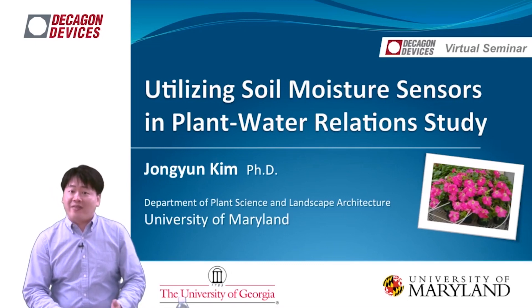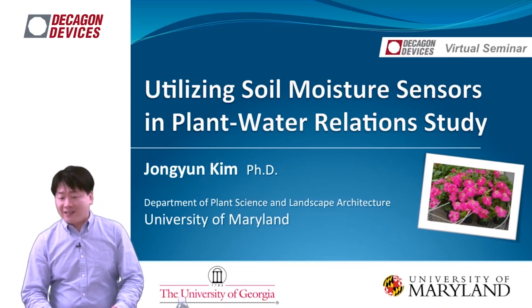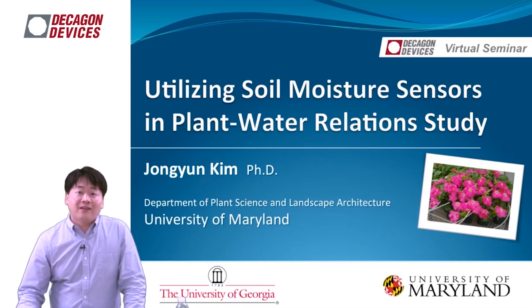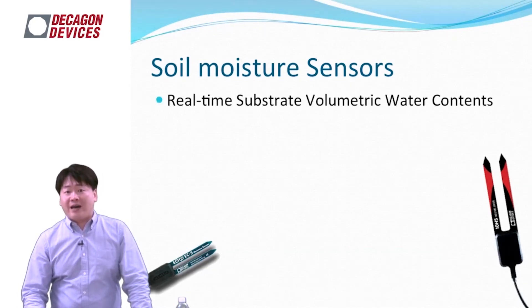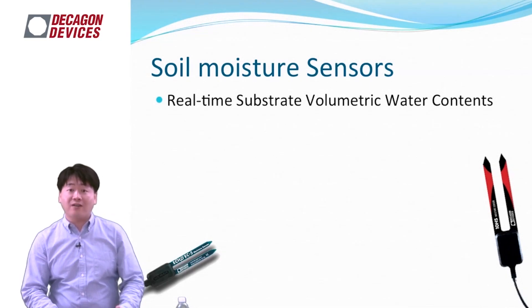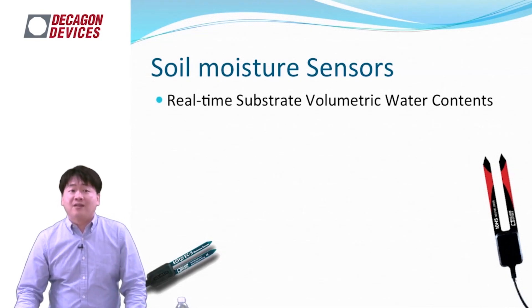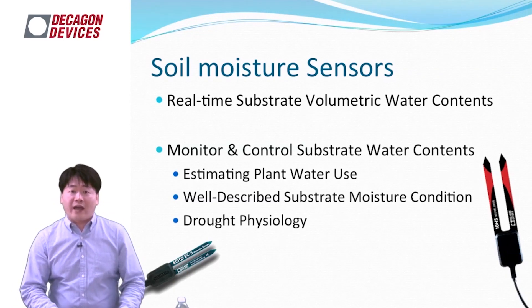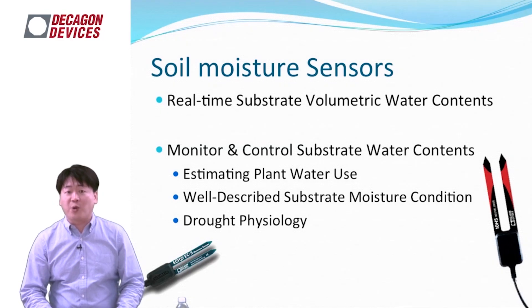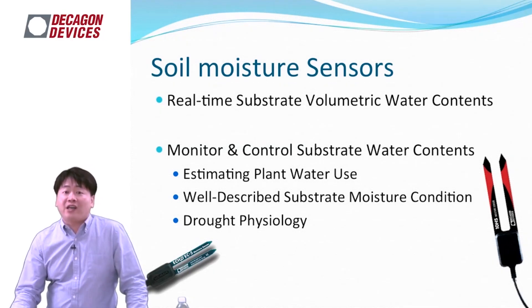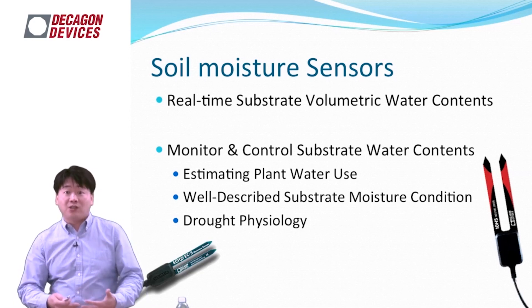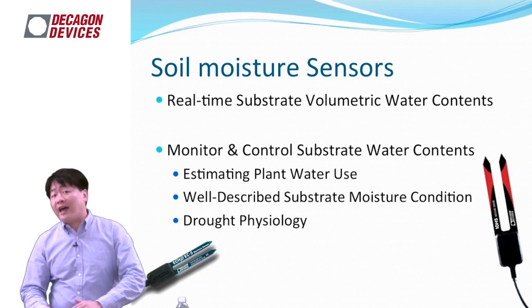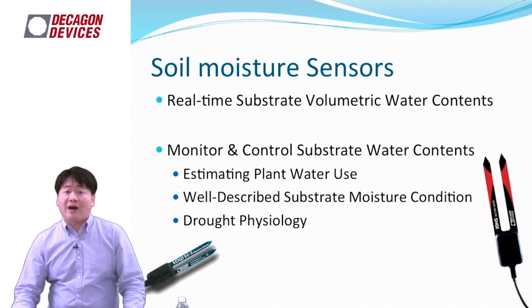I use soil moisture sensors and data loggers extensively in my research because they give very good insight about the substrate water contents or soil moisture contents of the soil environment of the plants. I could use the data logger to monitor and control substrate water contents, and get estimations of plant water use per day or per hour, which gives very good description of soil moisture contents and drought physiology.